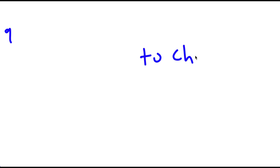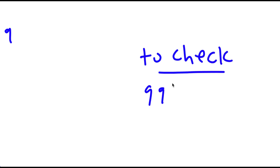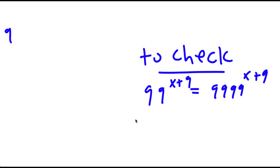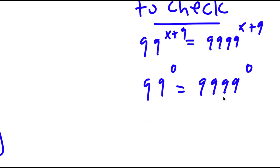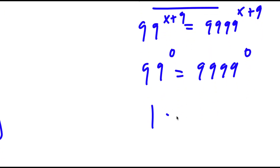So now to check: the original equation was 99 to the power of x plus 9 equals 9,999 to the power of x plus 9. We know x is negative 9, so I have 99 to the power of 0 is equal to 9,999 to the power of 0. Anything to the power of 0 is 1, so I have 1 equals 1. This confirms my solution is correct.